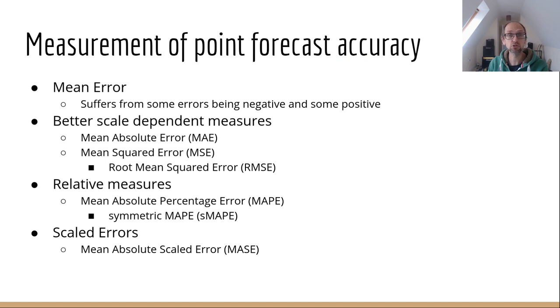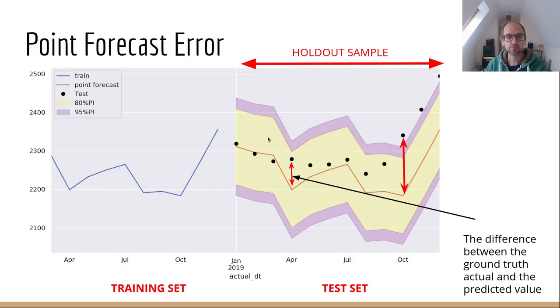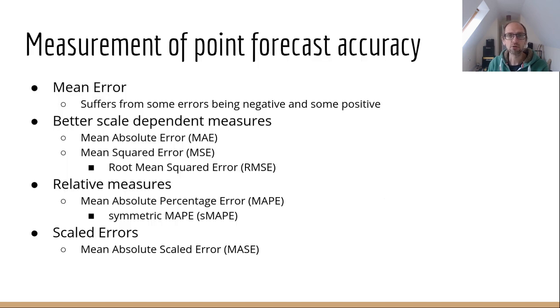An obvious way to do it would just be to take the mean. We calculate the difference of all of these values from their actual values, and then we take the average. Well, the problem with that is some of the errors are positive and some of the errors are negative, so these kind of average out. Your mean error might look quite small, but some of the errors might be absolutely enormous. So that's not a good idea.